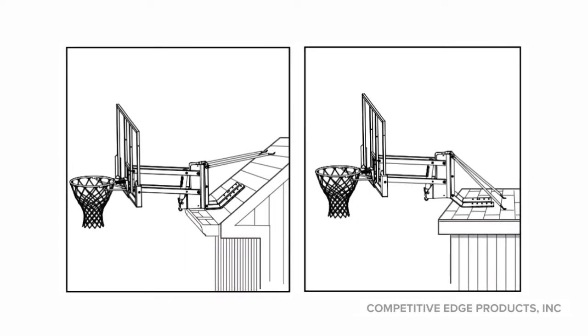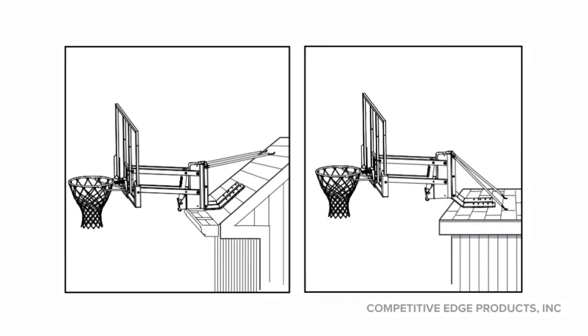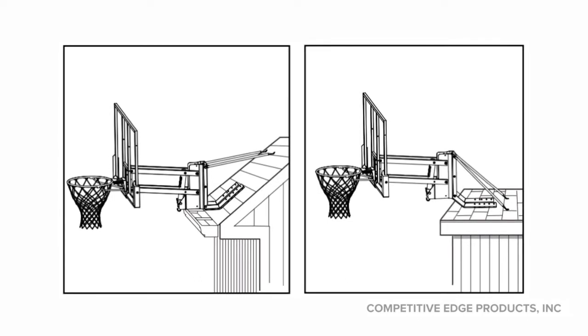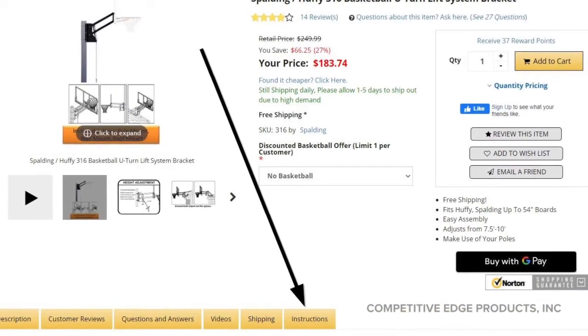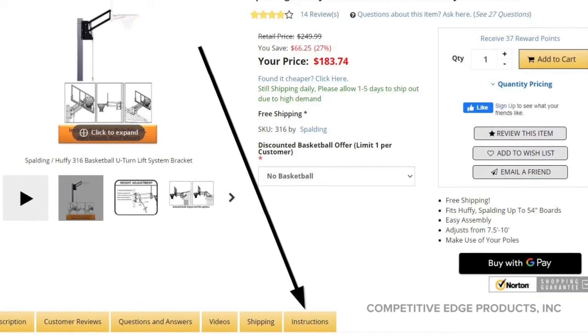So in those situations, we highly recommend that you get some expert advice. Take the instruction manual to Home Depot or Lowe's. They'll tell you exactly what type of hardware you need for your specific application. This is how you find the instruction manual. Just go ahead and click the instruction tab on the very right, and it will take you to the instructions.